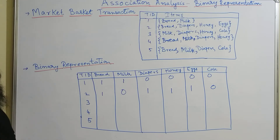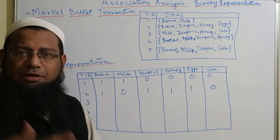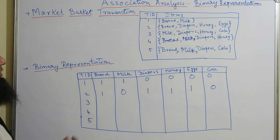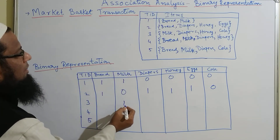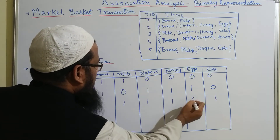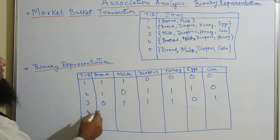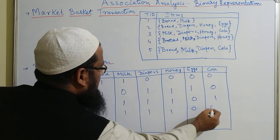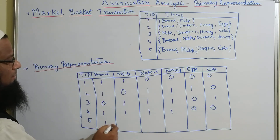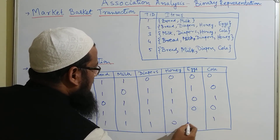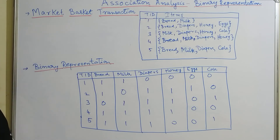I want you to pause this video and complete the other three transaction IDs, then you can check the final answer. For transaction three we have milk, diapers, honey, and cola — the rest are zeros. The fourth one is bread, milk, diapers, honey — the last two are zero. The fifth one is bread, milk, diapers, and cola — honey and eggs are zero.